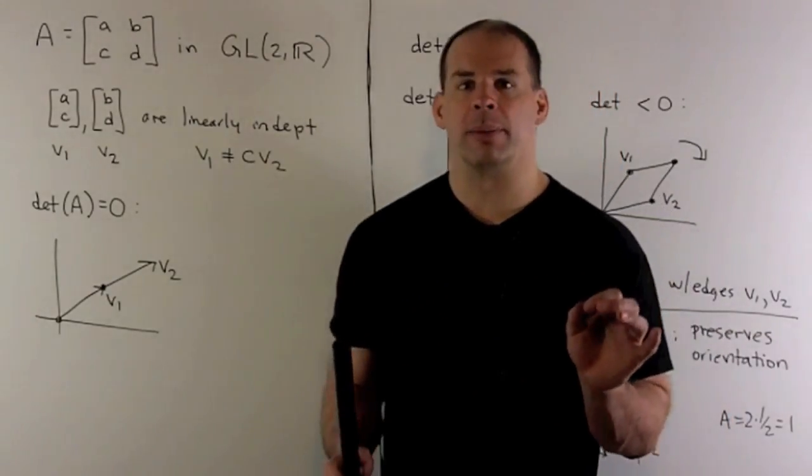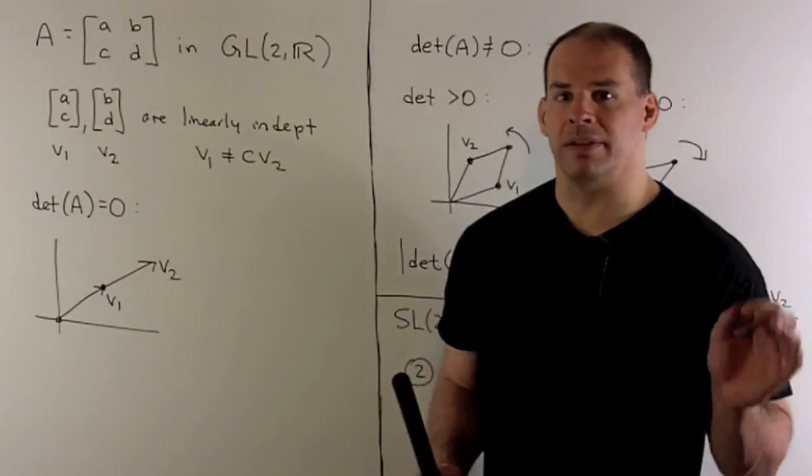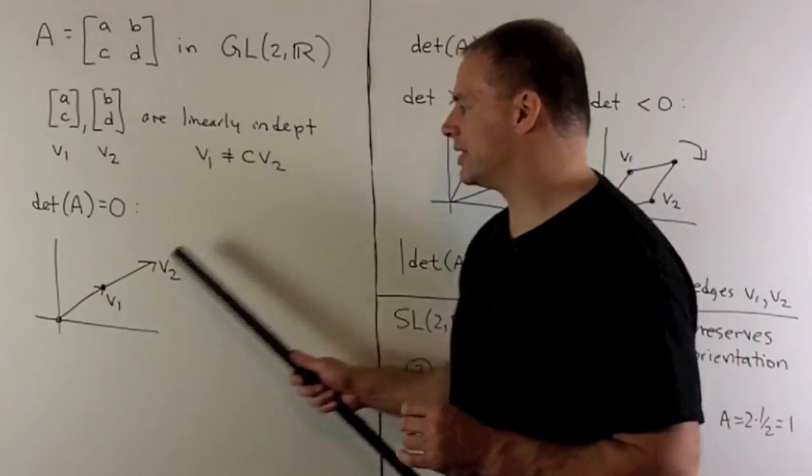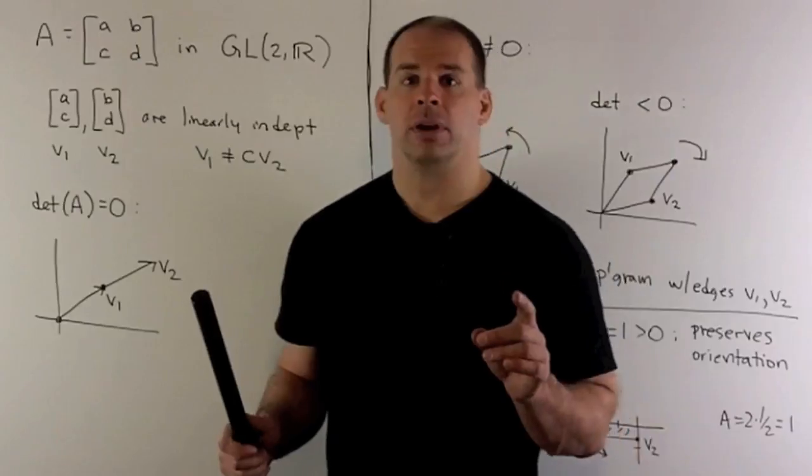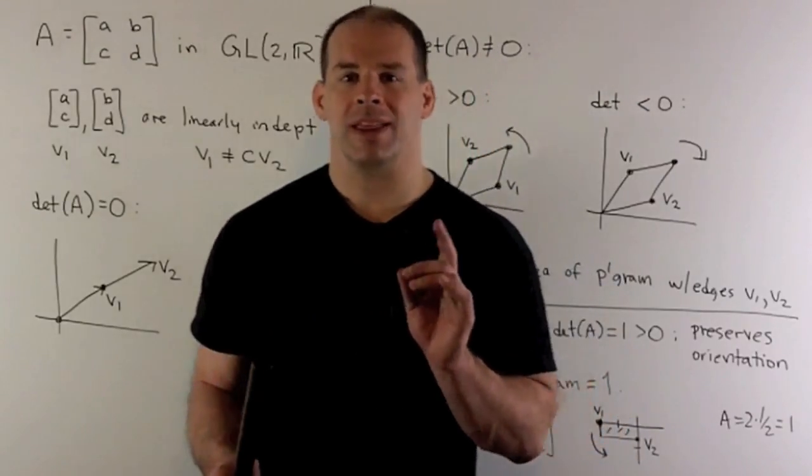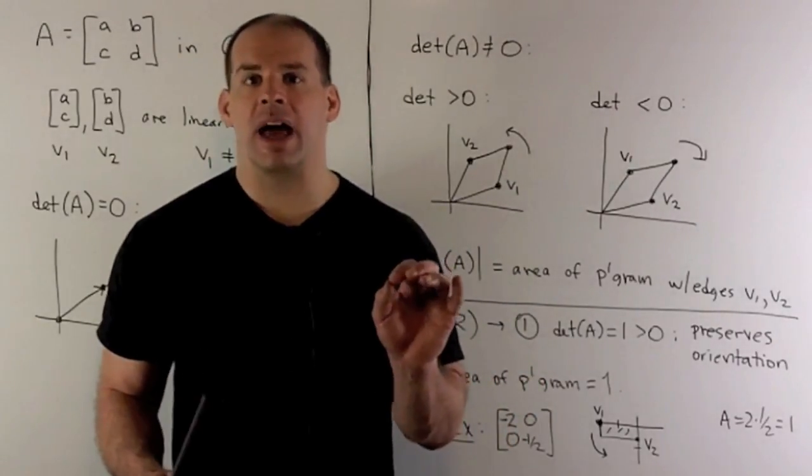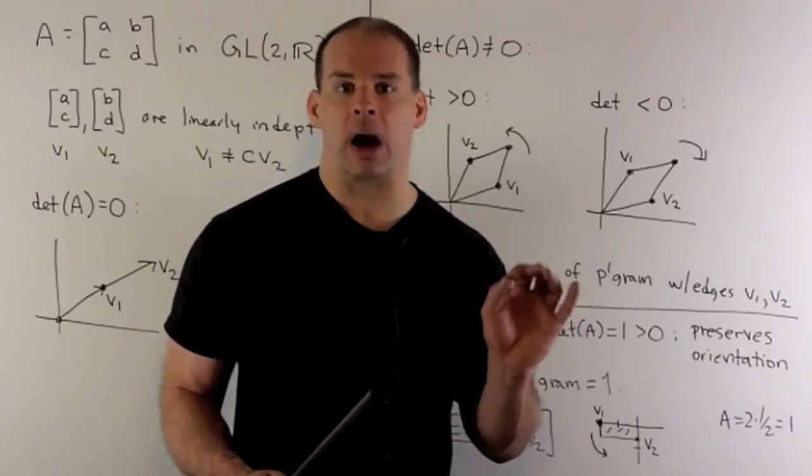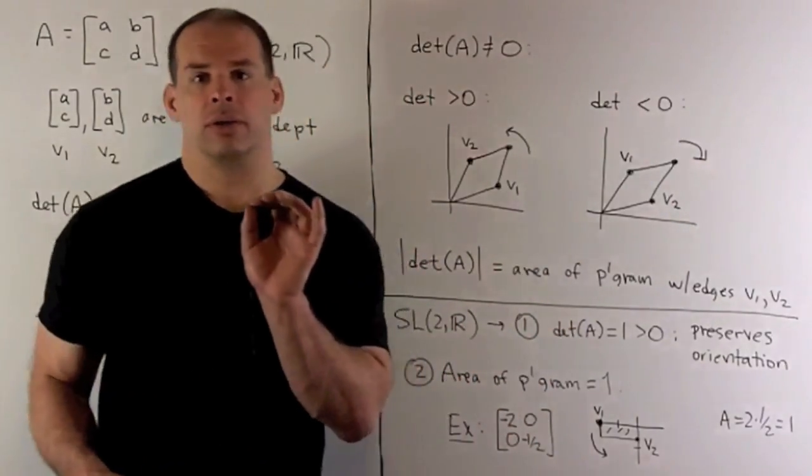So, if I had determinant of our matrix equal to zero, that just says that V1 and V2 are going to live on the same line. If we're in GL(2,R), so our determinant is not equal to zero, then our two vectors are not on the same line, which means we could form a parallelogram.